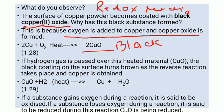If hydrogen gas is passed over this heated copper oxide, the black coating on the surface disappears as the reverse reaction takes place and copper is obtained. The equation is: CuO + H₂ → Cu + H₂O. If a substance gains oxygen during a reaction, it is said to be oxidized. If a substance loses oxygen during a reaction, it is said to be reduced. During this reaction, CuO is being reduced.